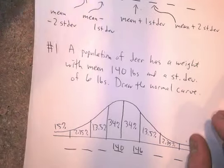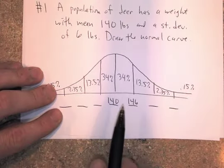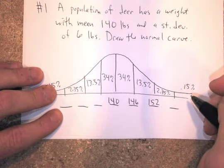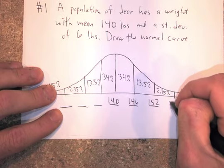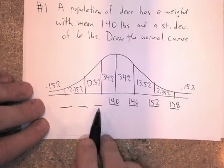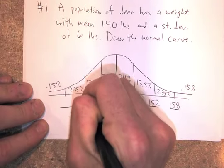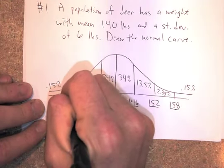And now I'm going to go to the mean plus two standard deviations, which means add on six twice. So plus six, plus six. I'm going to add 152. And then keep adding six. We're at 158. Going down, I'm going to subtract six. So 134, 128, 122.